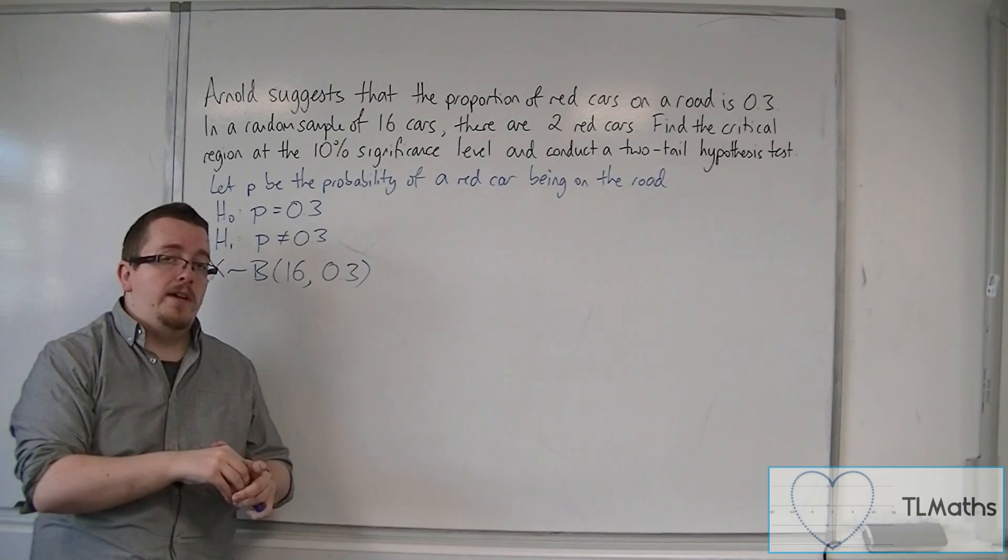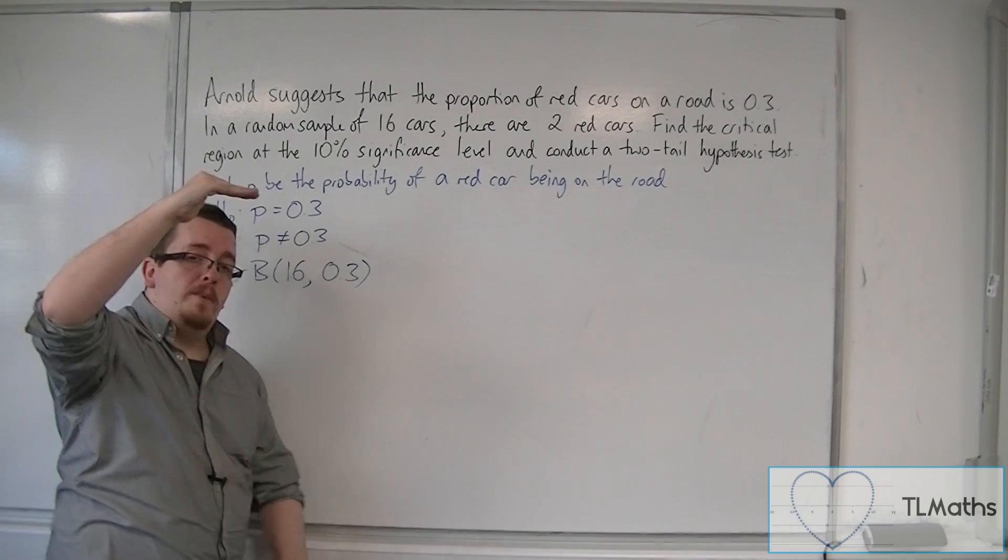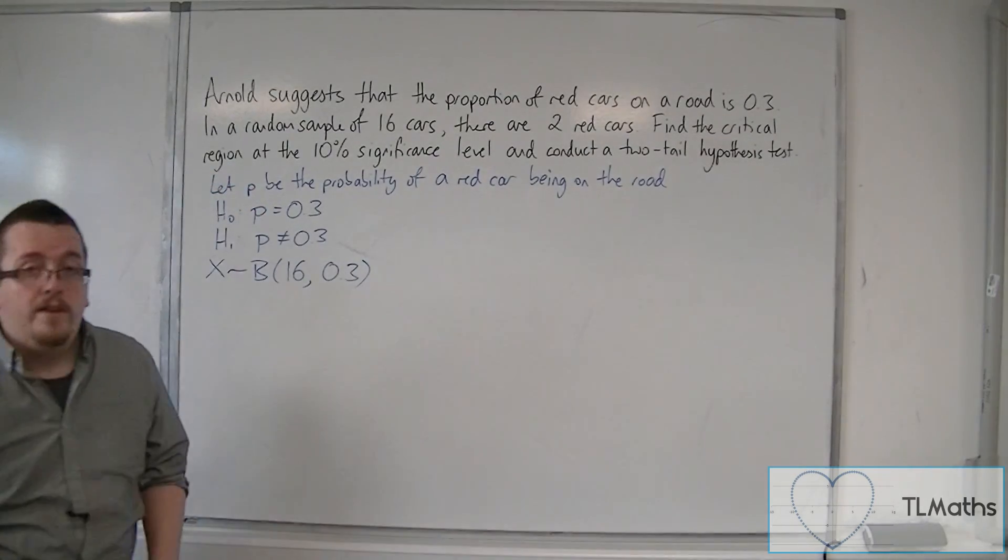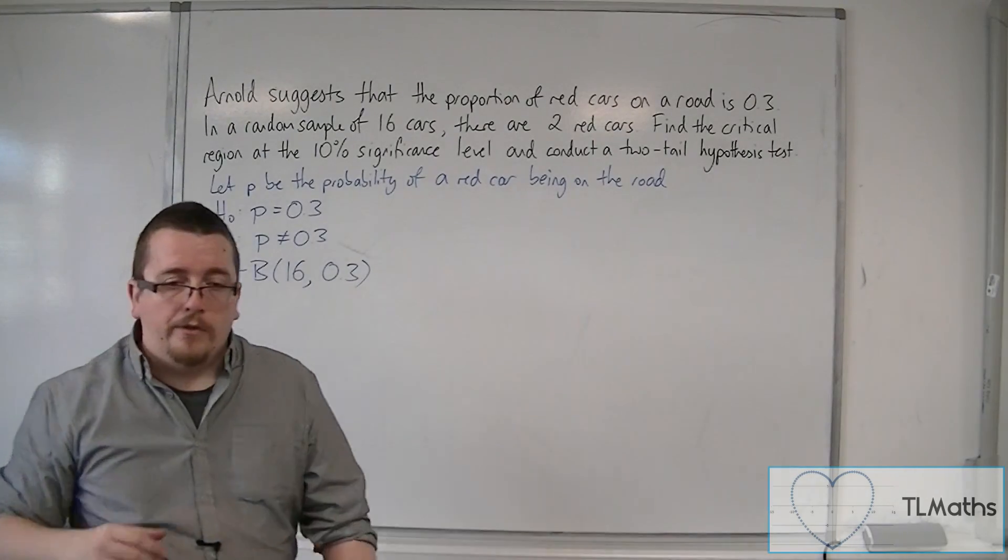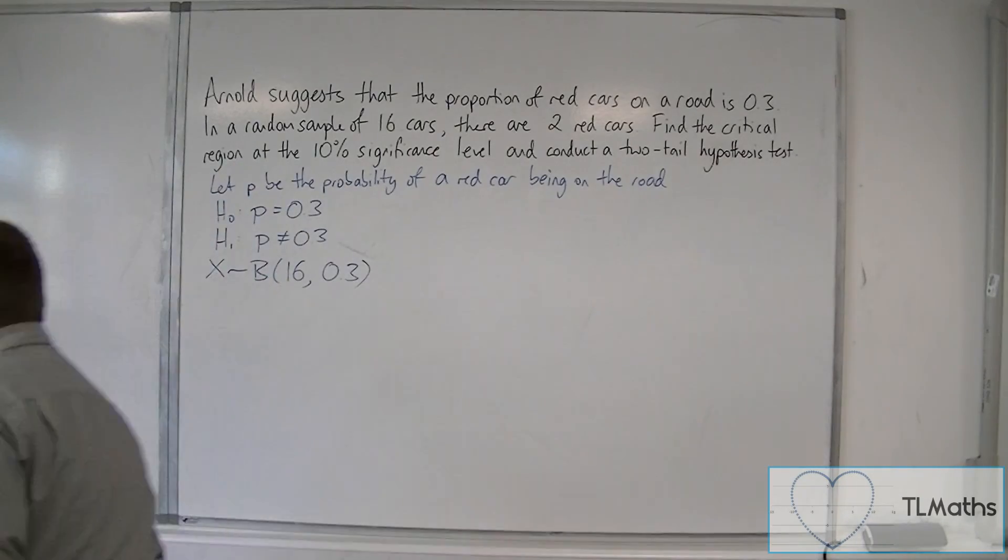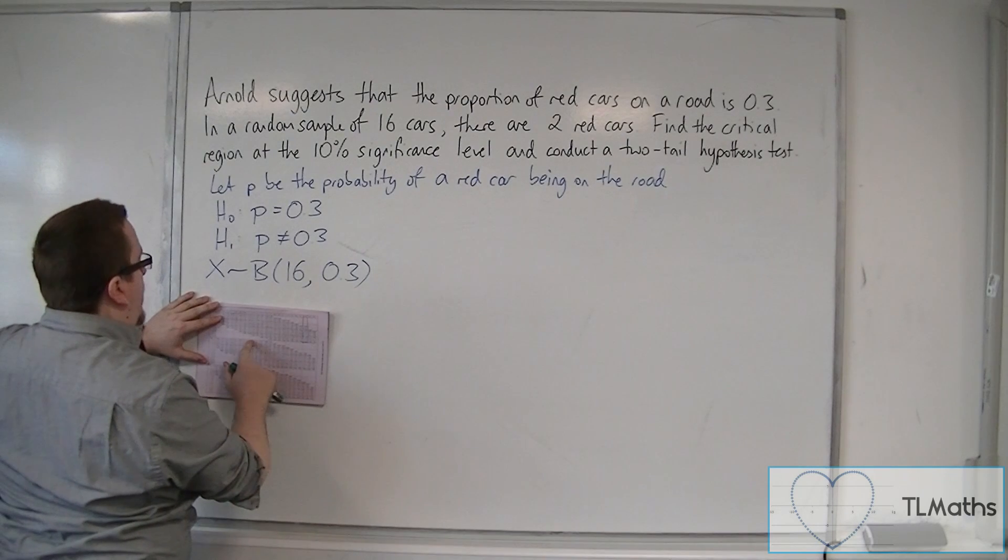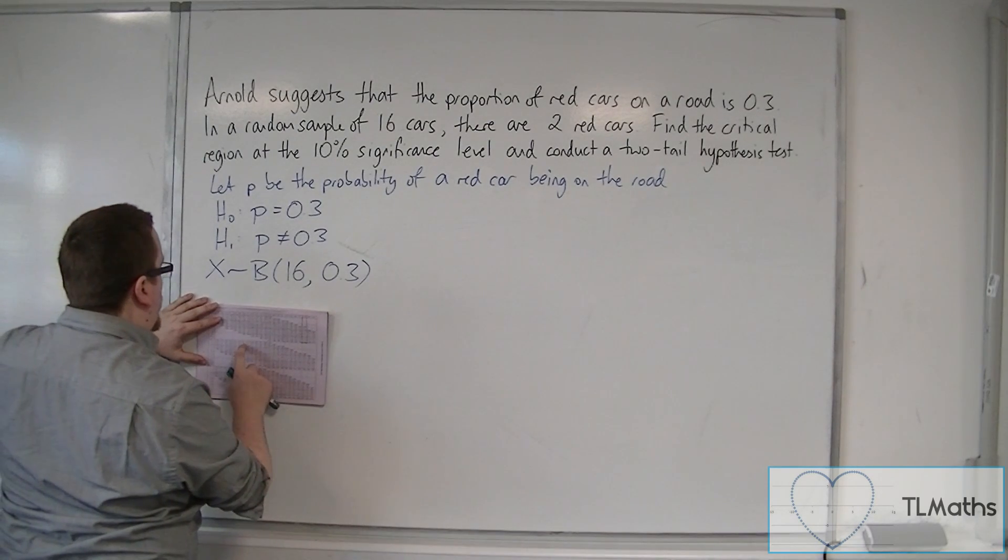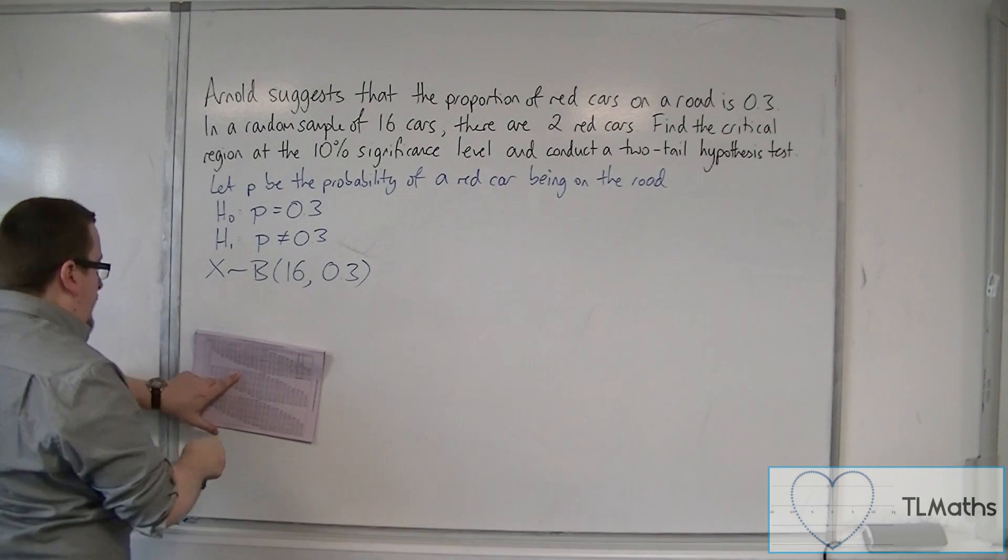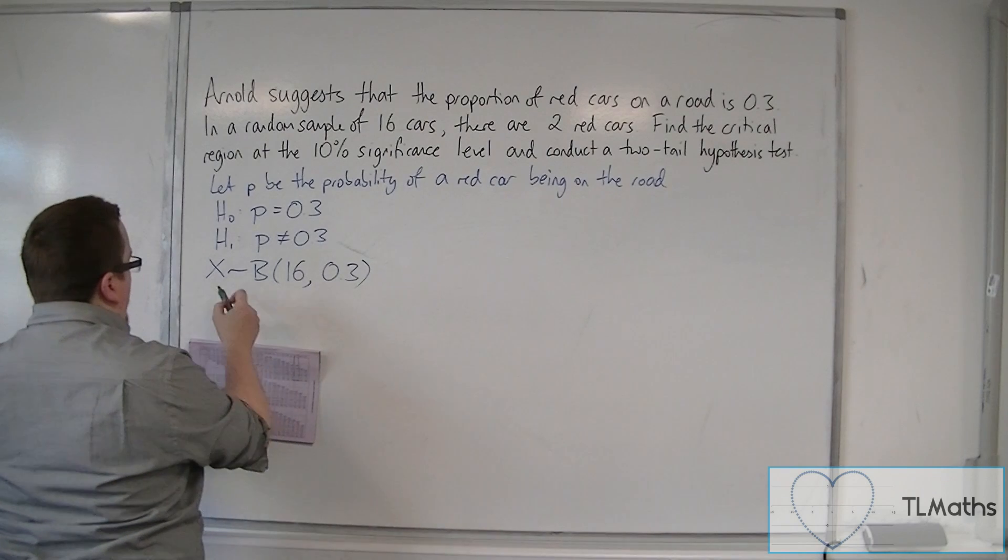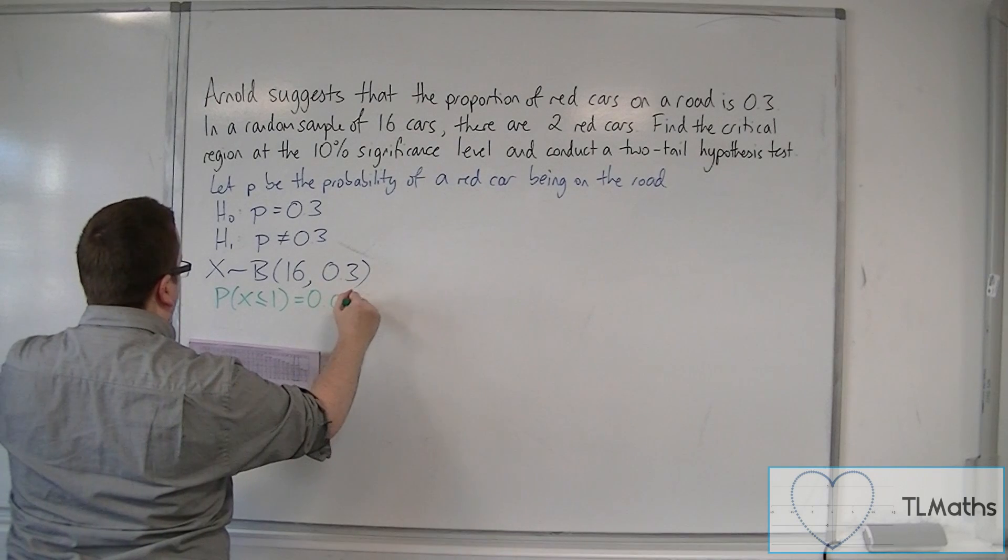So, with a two-tailed test at a 10% significance level, we're looking at 5% from the top and 5% from the bottom. So we get our tables. N is 16, and a probability of 0.3. Now, we're looking at 5% from the bottom, so we're looking for that crossover. We have probability of X being less than or equal to 1 is 0.0261.